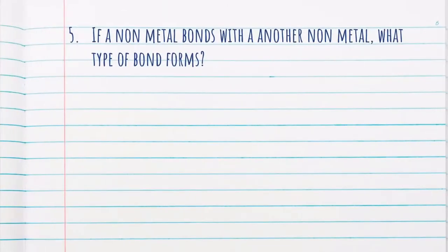Now, if a nonmetal and another nonmetal form a bond, what type of bond would they form? Nonmetals tend to have higher electronegativities, meaning not one atom is going to be able to completely take an electron from the other. Instead, they're going to share the electrons. Since they are sharing their electrons, they form a covalent bond.